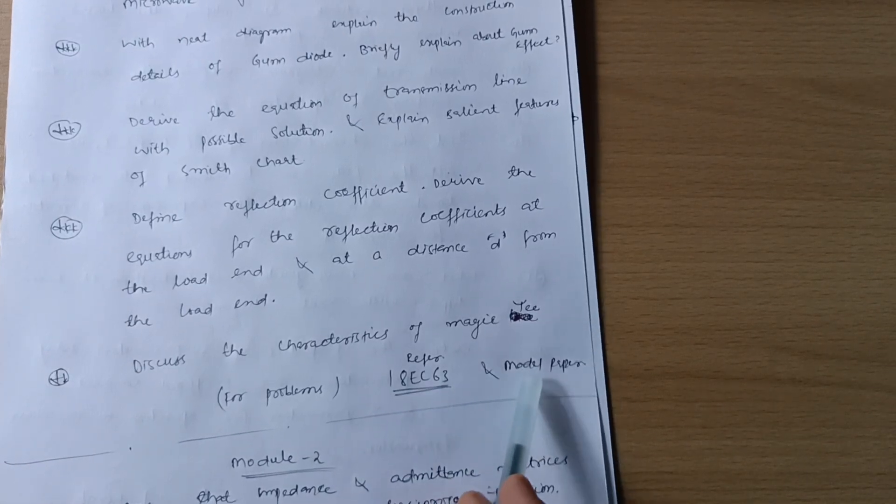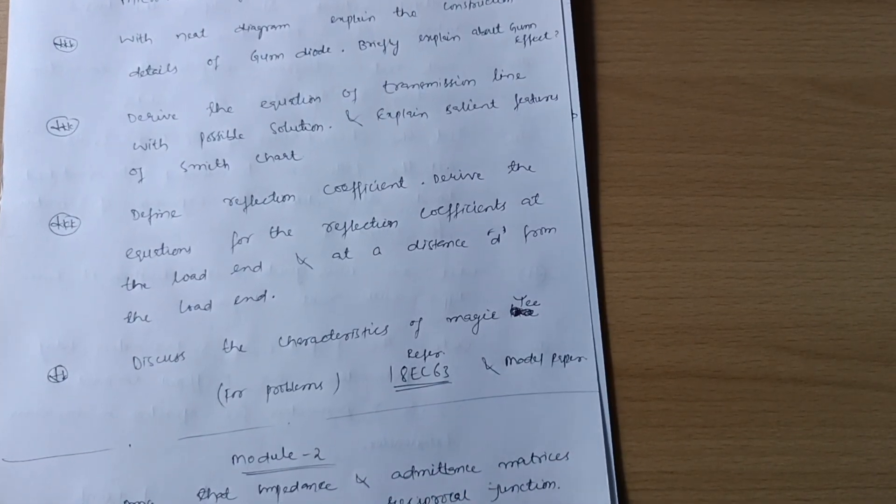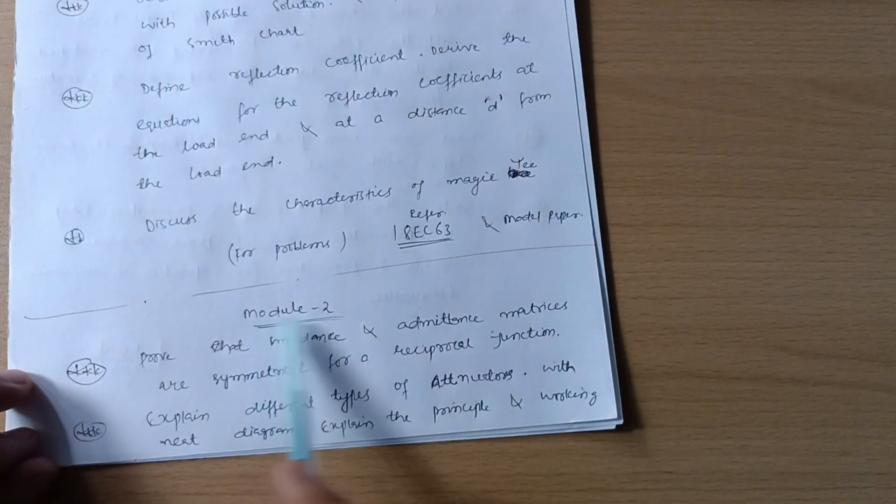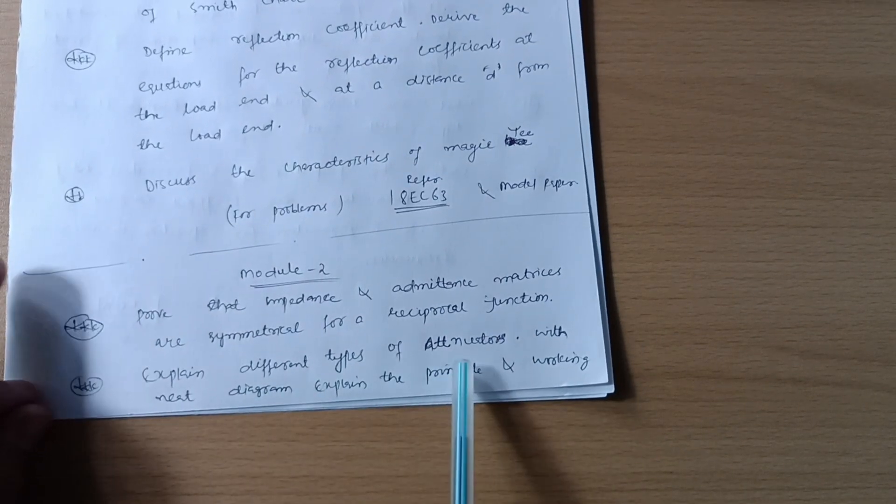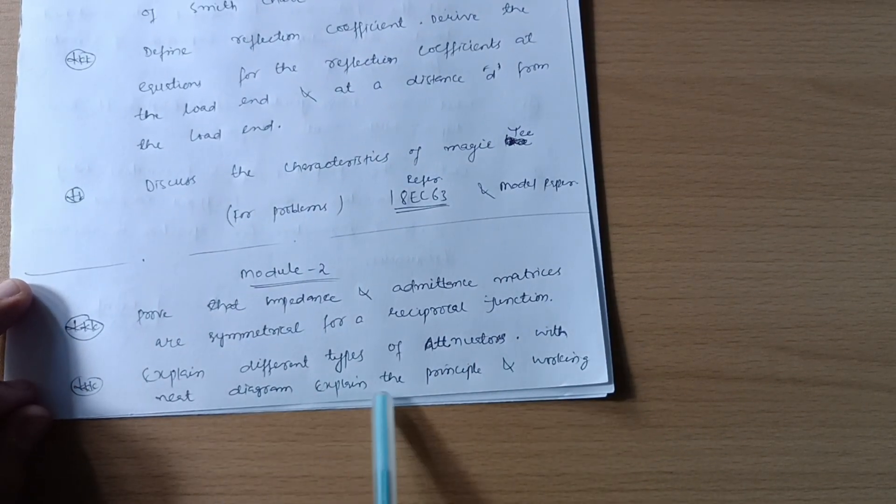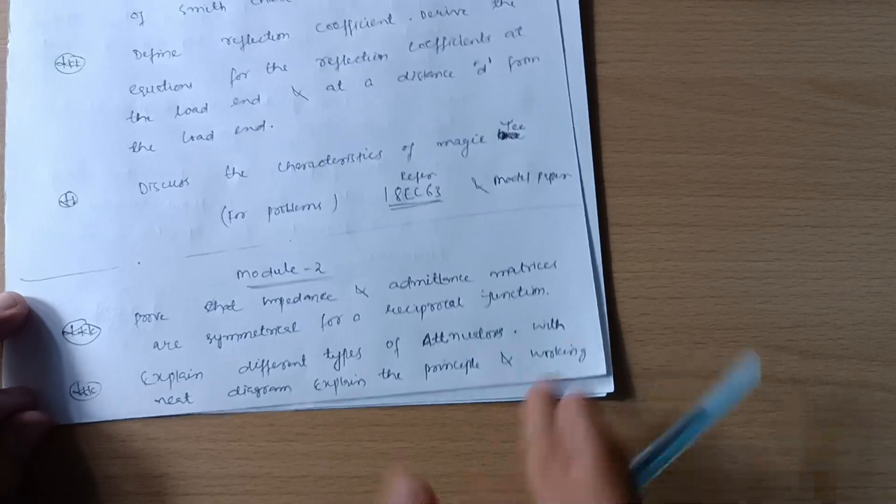Next is Model 2. Prove that impedance and admittance matrices are symmetrical for a reciprocal junction. Explain different types of attenuators with neat diagram. Explain the principle and working of precision time variable attenuator.